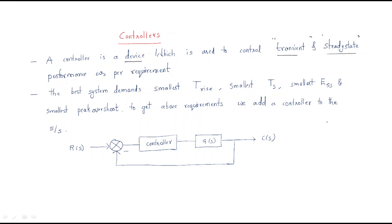Transient means, for example, if the system has to reach a certain point and the output follows a path with oscillations — that area with oscillations is the transient. After the oscillations settle and the magnitude becomes constant, that is called the steady state.